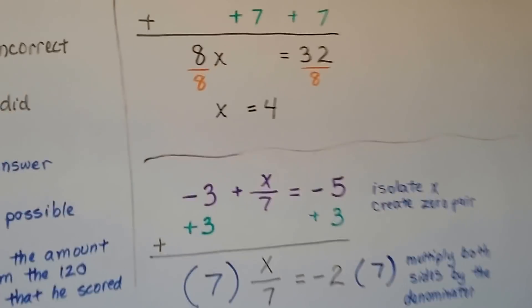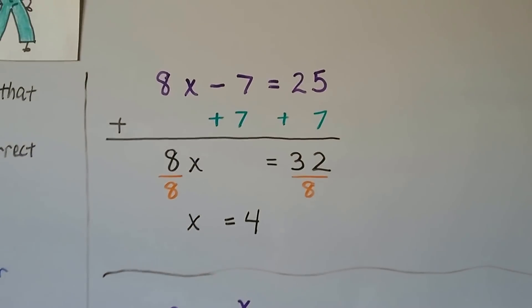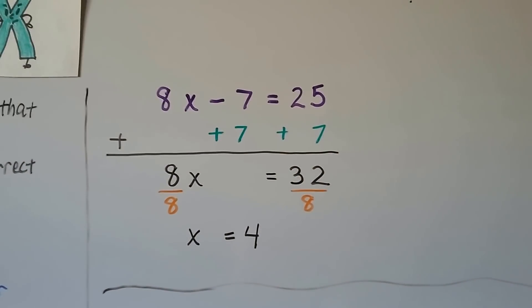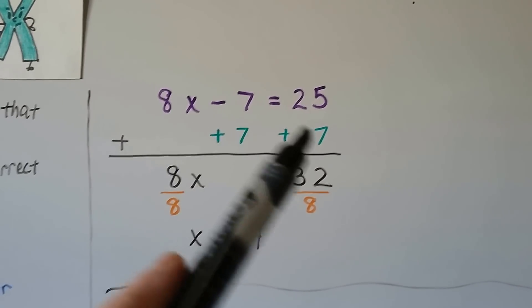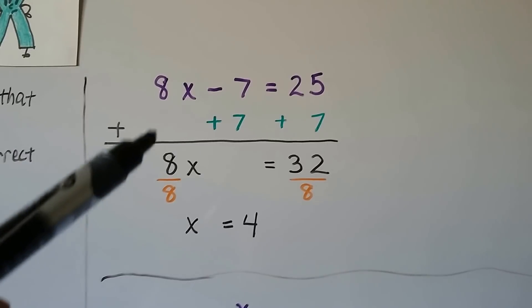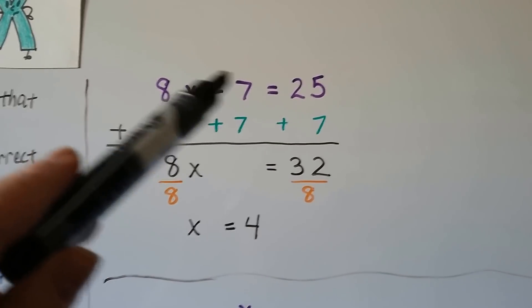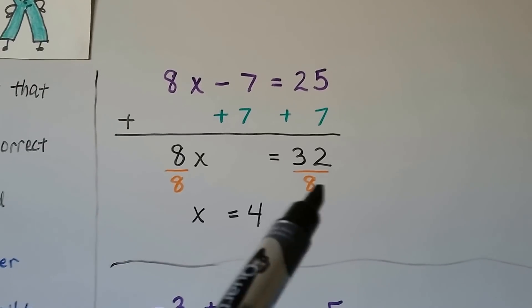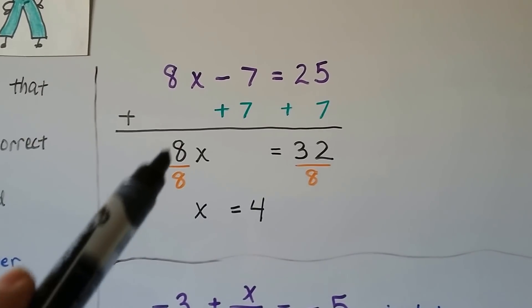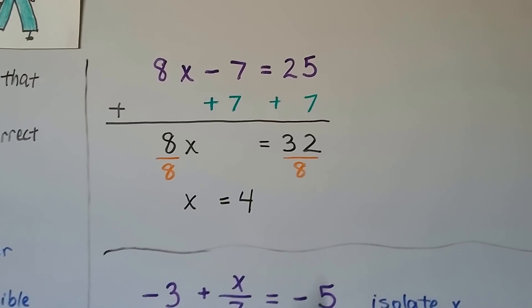Here's some equations just to keep you going. We have 8x minus 7 equals 25. With this minus 7, we can add 7 to each side, and that creates a zero pair here. Now we have 8x equals 32. We divide both sides of the equation by the coefficient 8. We get 1x equals 4.